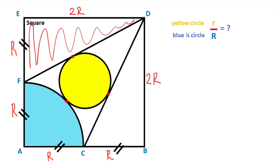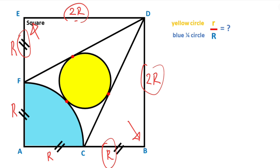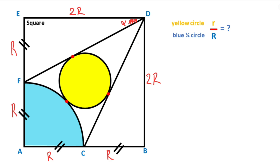Notice that this triangle and this triangle are congruent. Why? Because these two lengths and these two lengths are equal, and the angles between these two equal sides are equal. Therefore, according to Side-Angle-Side, these two triangles are congruent. So if here is alpha, then here must also be alpha; and if here is theta, then here must also be theta.